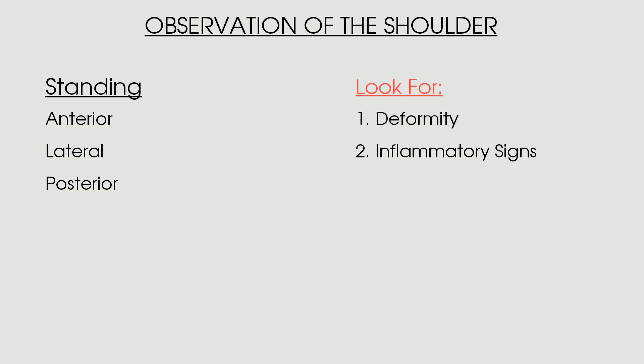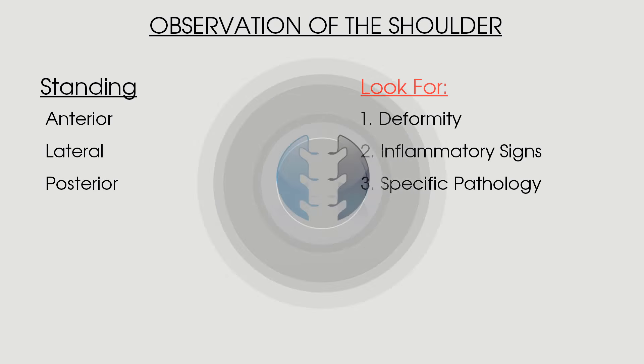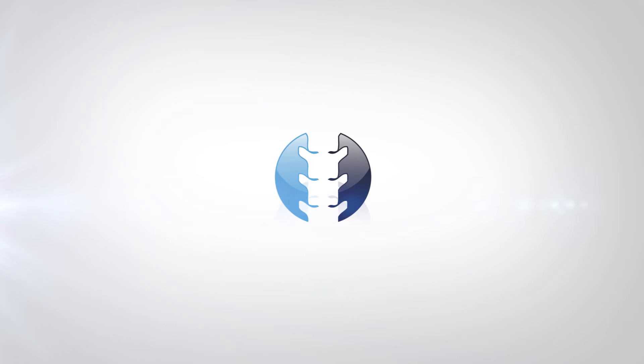Look for deformity and inflammatory signs — redness, swelling and bruising. You can also look for signs of specific pathology in each view as mentioned throughout the video. And that concludes our video on observation of the shoulder joint.